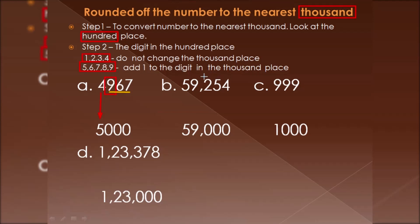Next is 59254. Look at the thousands place — it is 9 — and the hundreds place is 2. Since 2 is less than 5, we do not change the digit in the thousands place; it remains as it is, and all remaining digits become zero.